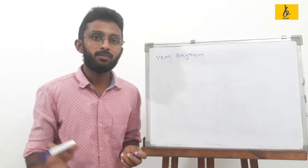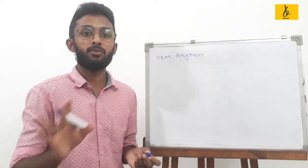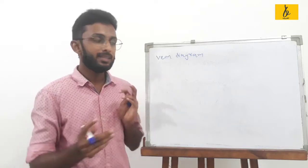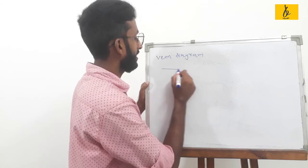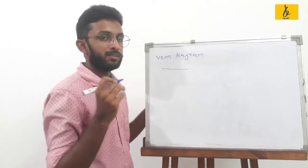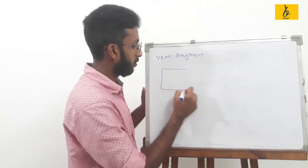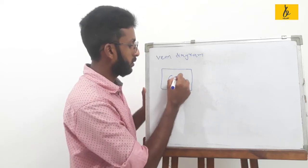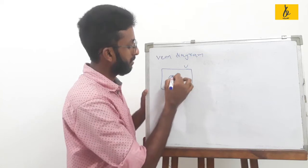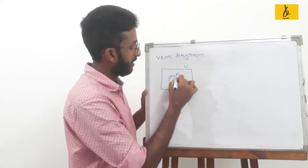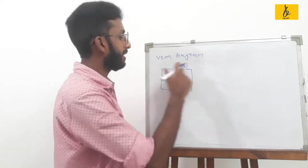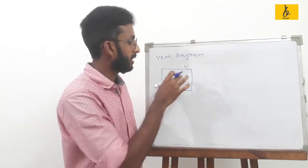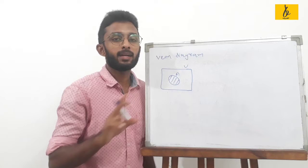Venn Diagram represents the graphical representation of sets. In a Venn Diagram, one is the universal set and one is our core set. The universal set is denoted by a rectangle, and the set is represented by an ellipse.